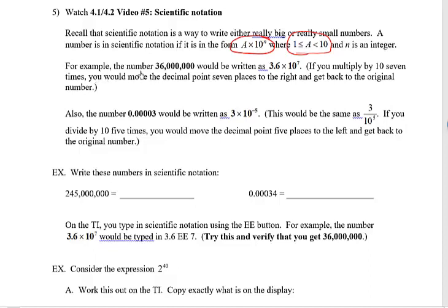Okay, so here's an example, a really big number, 36 million. What's the scientific notation way of writing it? Well, you can see it right here.